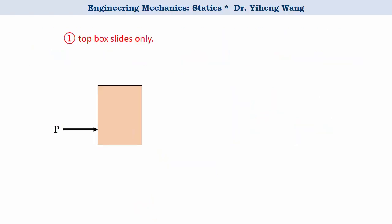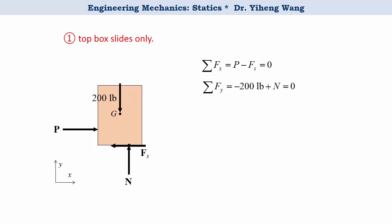First, let's consider the situation when the top box is about to slide. We complete the free body diagram of the top box by adding the weight and the normal force. Since we are not concerned with tipping over, the exact locations of these forces are not important. The impending motion is to the right, so the static frictional force is to the left. Using the x-y coordinate system and the two force equilibrium equations, with Fs = mu_s · N at the limiting condition, we calculate P to be 160 pounds.